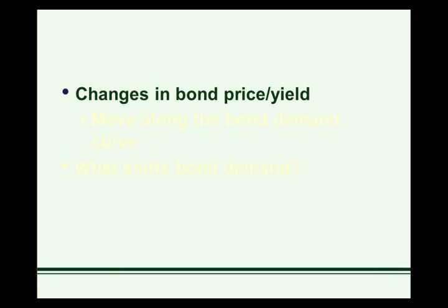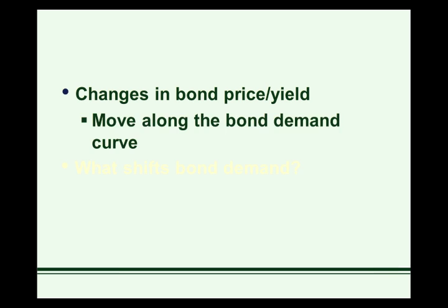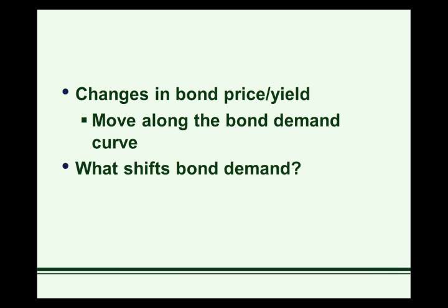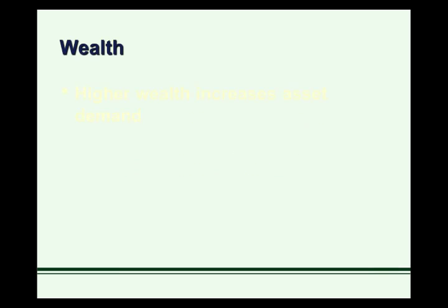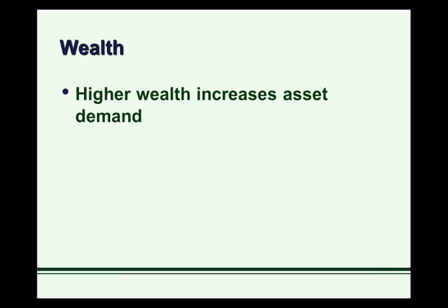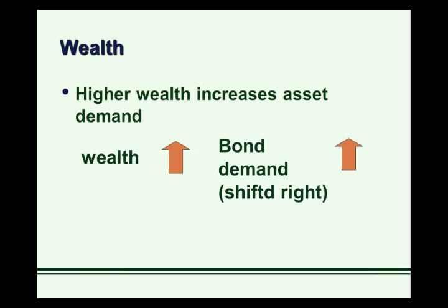Changes in bond price or yield move us along the bond demand curve, up and down as bond price rises or falls. If we have a shift in bond demand, we have to think about what outside factors will cause that shift. One of these factors is wealth. Higher wealth increases asset demand in general, so higher wealth will certainly increase bond demand because bonds are a financial asset — bond demand shifts to the right.